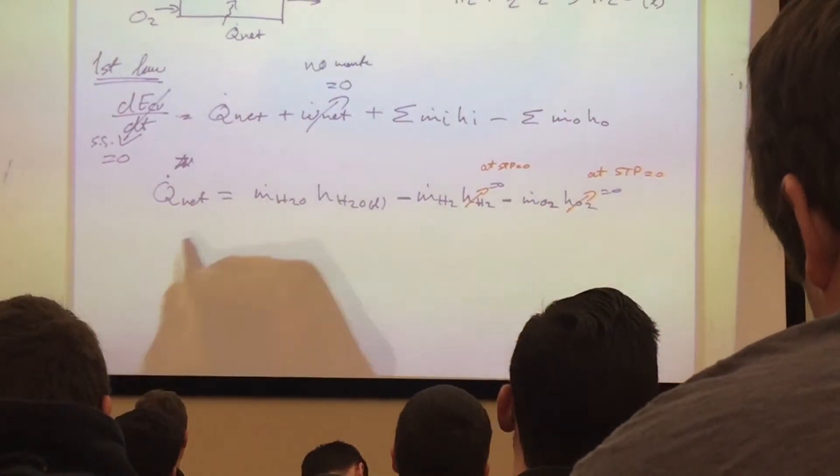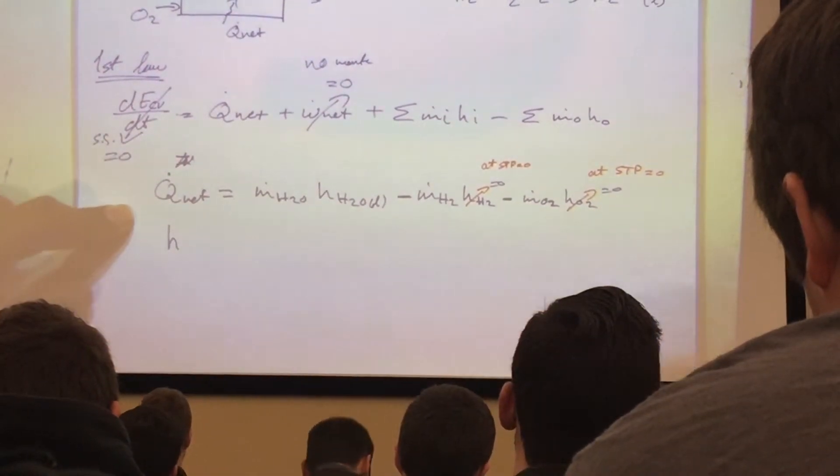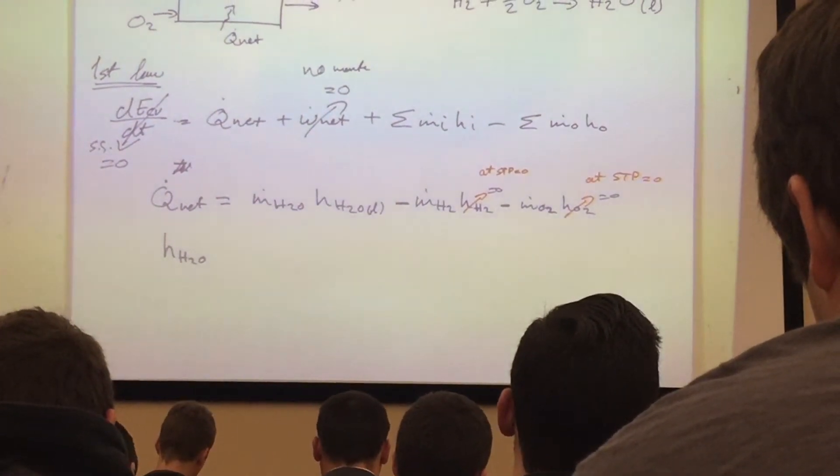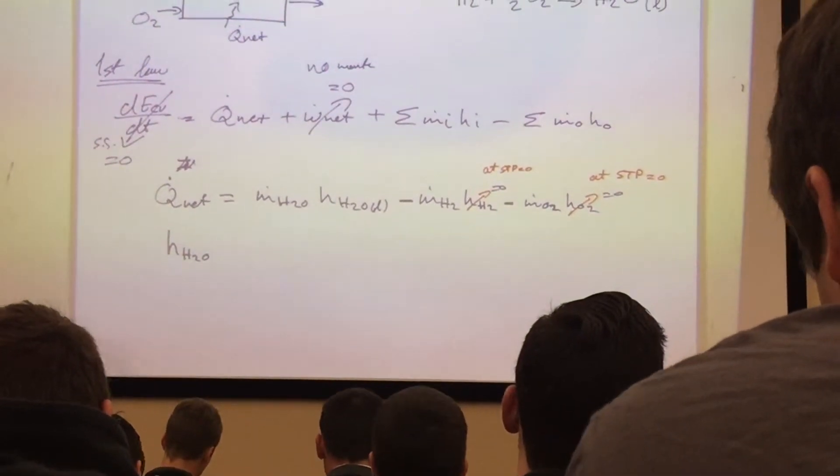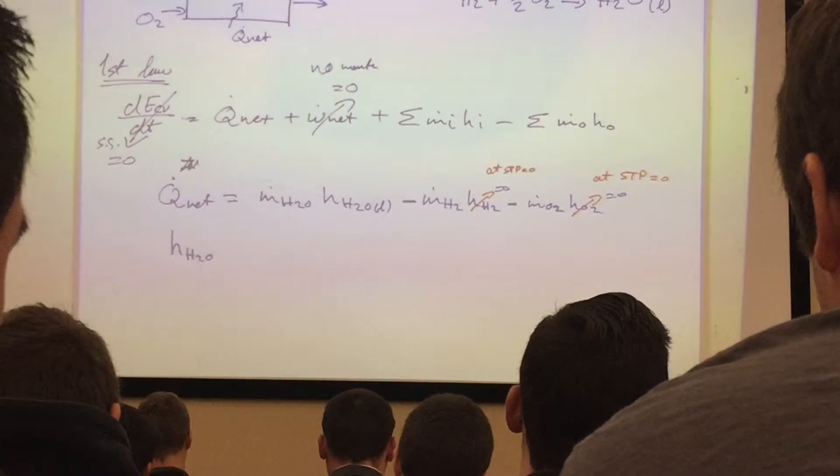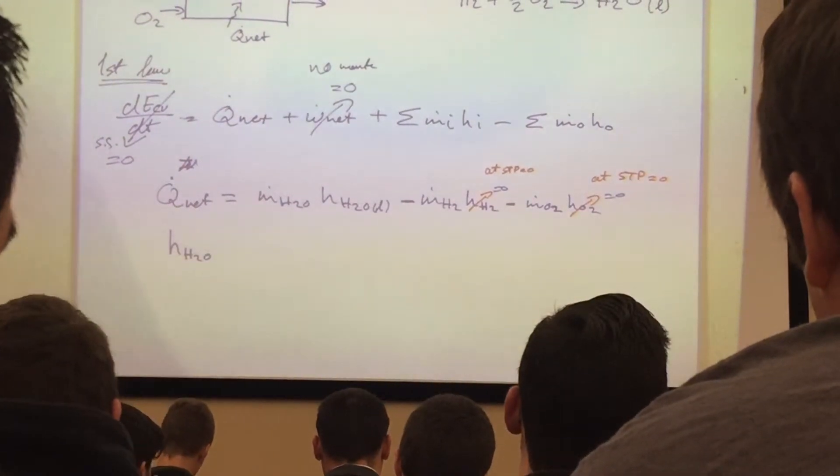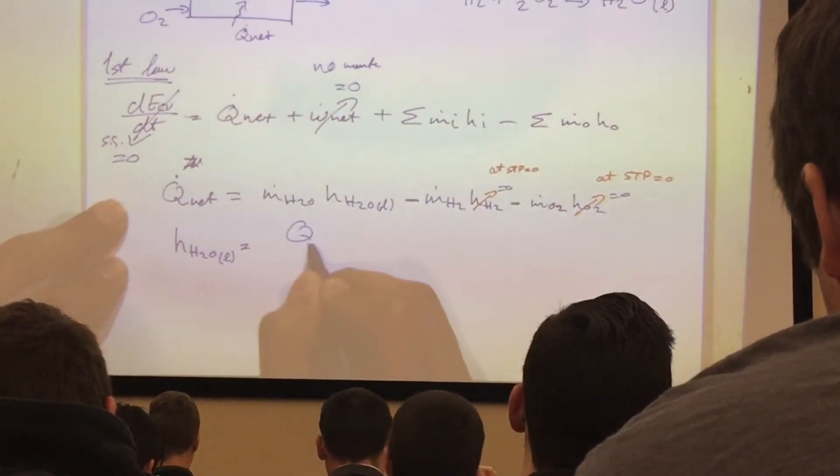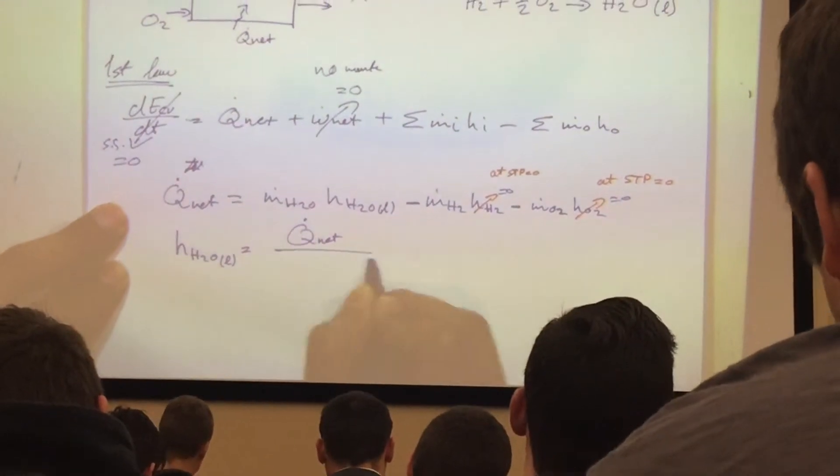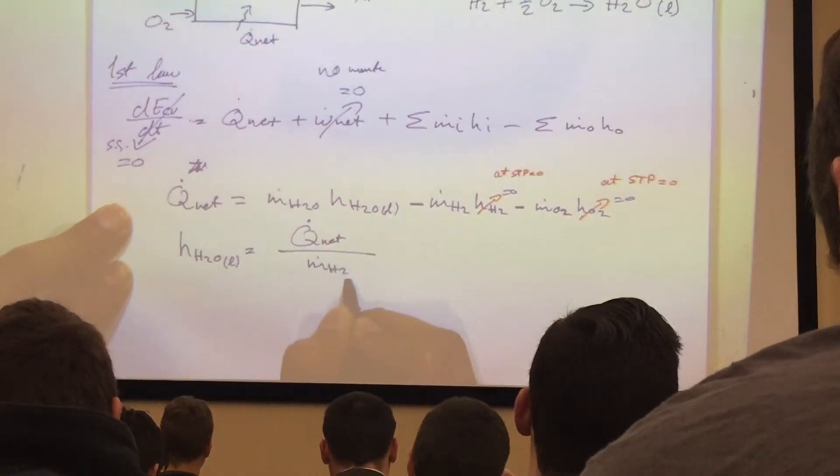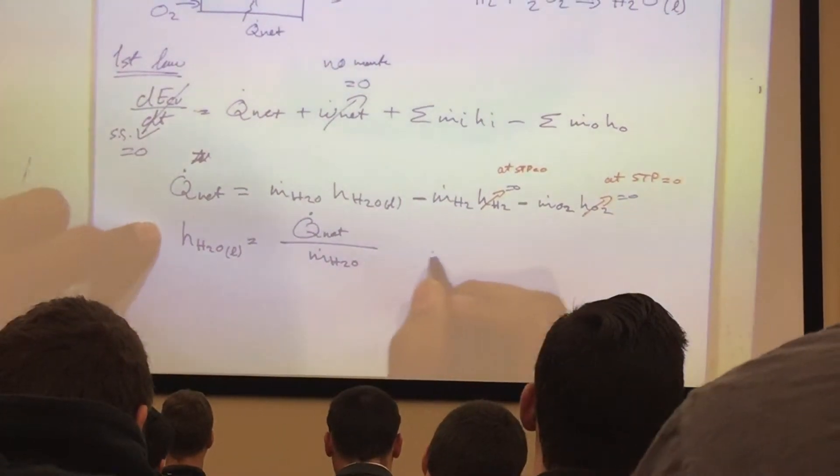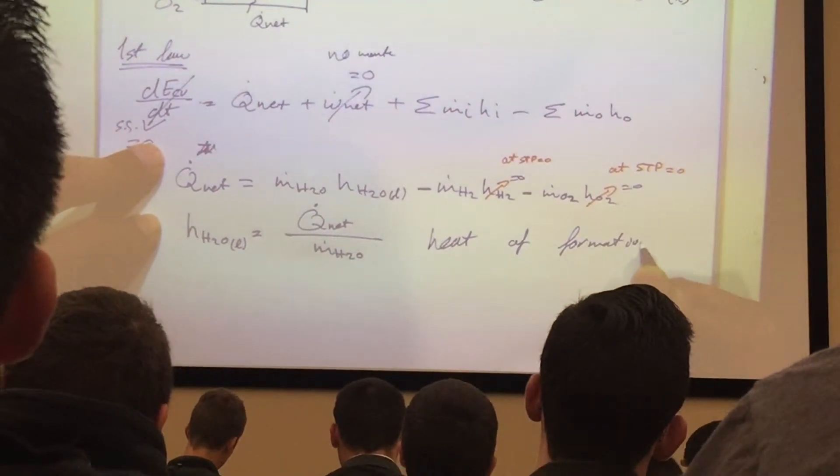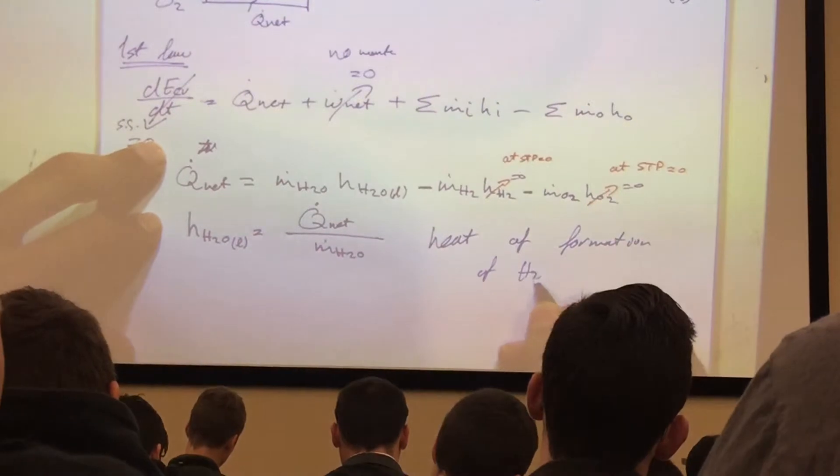And what I end up getting is the heat of formation, or enthalpy of formation of H2O, which is the enthalpy that was extracted by simply producing that reaction of hydrogen and oxygen to produce water in liquid form. This is equal to Q net divided by m dot H2O, which is the heat of formation of H2O in liquid form.